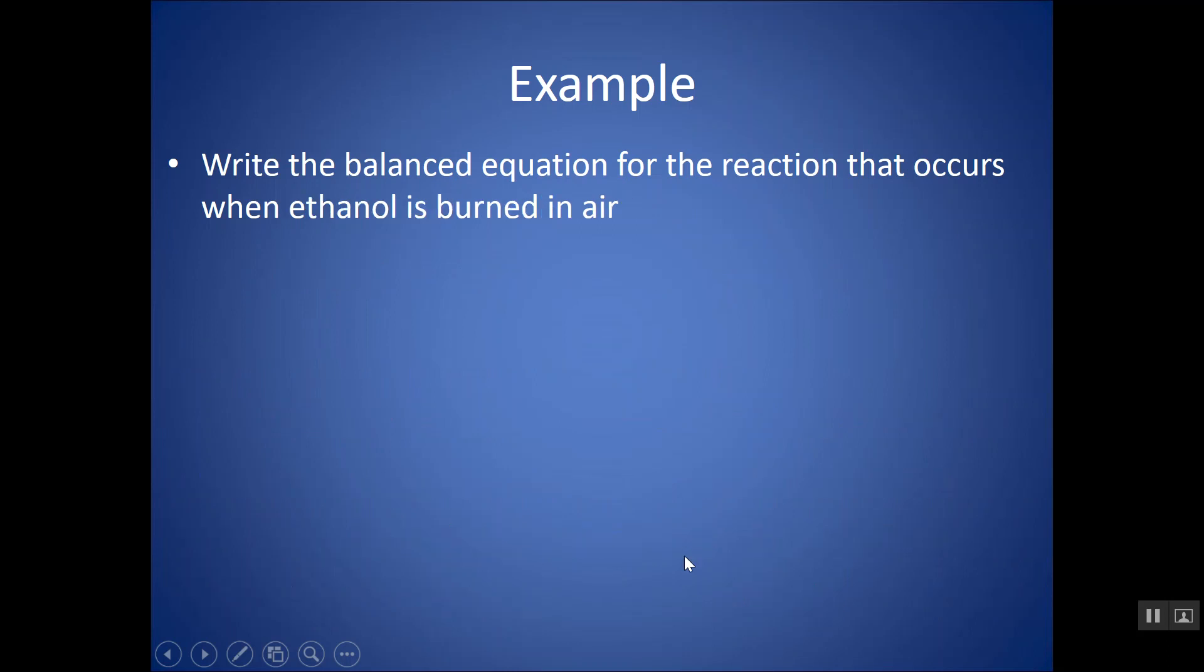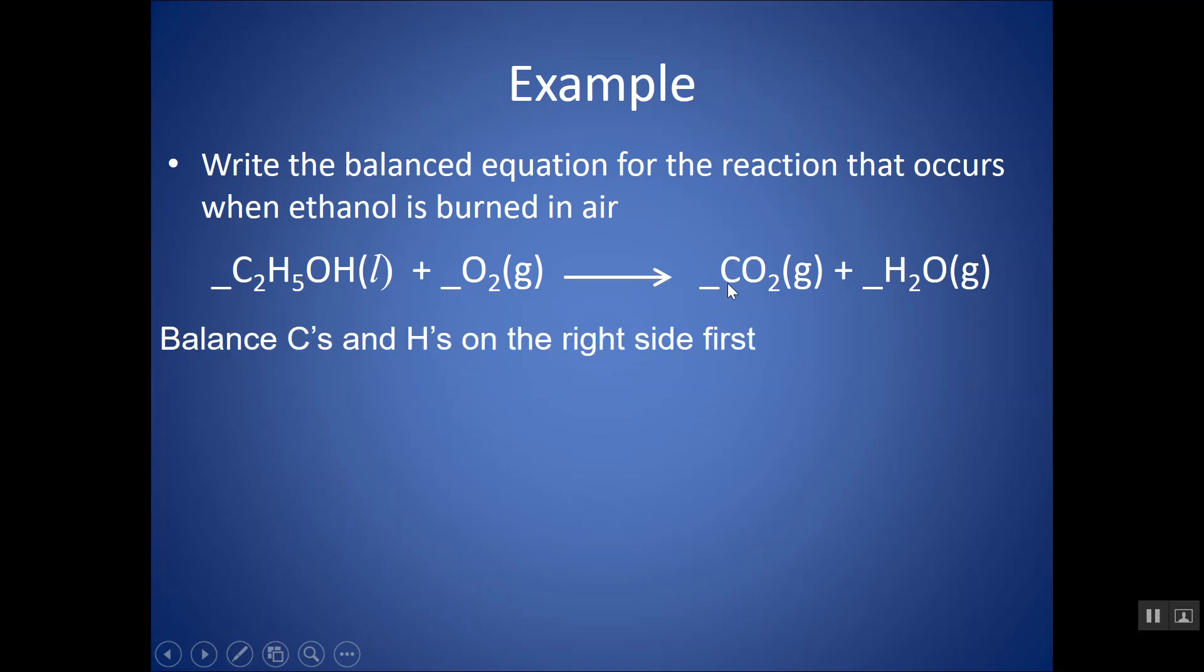Okay, write the balanced equation for the reaction that occurs when ethanol is burned in air. Ethanol is C2H5OH. So, C2H5OH plus O2 gives me CO2 and H2O would be my template. Let's balance the C's and H's first. There's two C's and six H's total. So, I would need 2 and a 3 to balance those. Now, let's add up the oxygens. There's 4 here. There's 3 here. That's a total of 7.